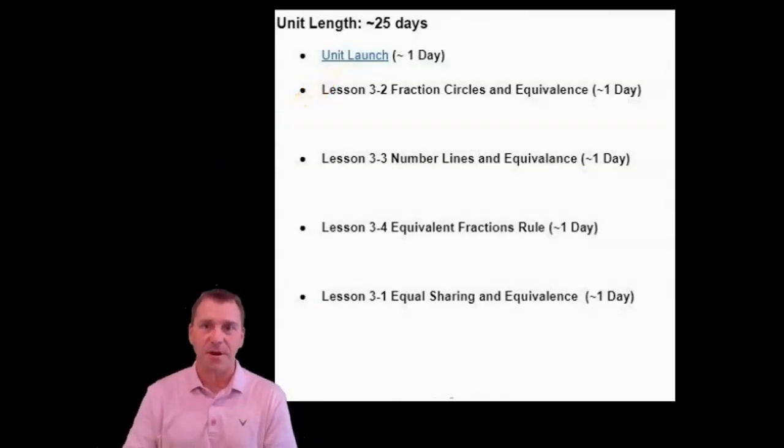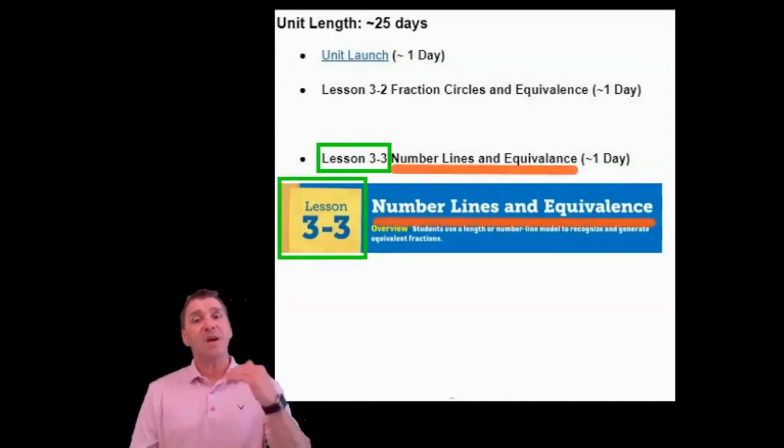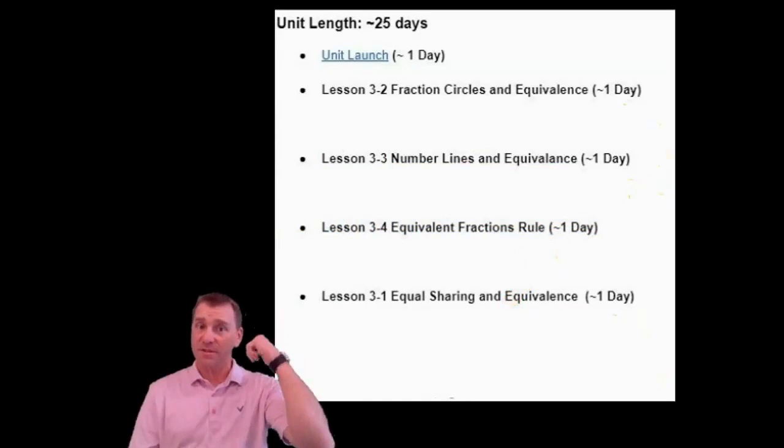From there, you will see the remainder of the itinerary for the unit. Lesson 3-2, Lesson 3-3, Lesson 3-4, Lesson 3-1, etc. The lesson number and titles can come straight from the manual. Notice after each lesson, there is an approximate day, just like the unit length.